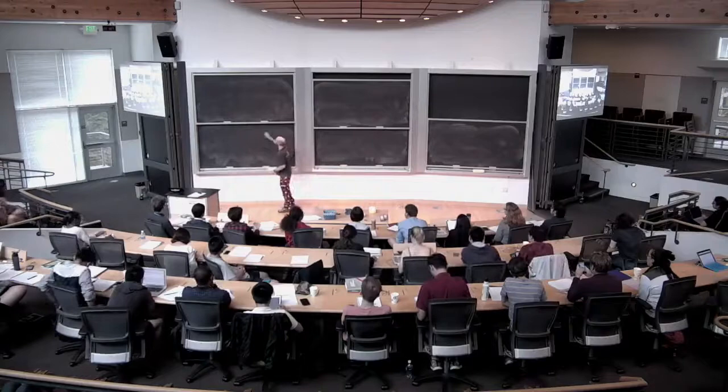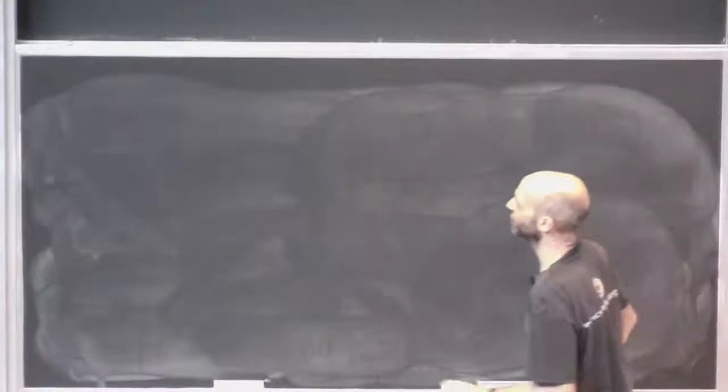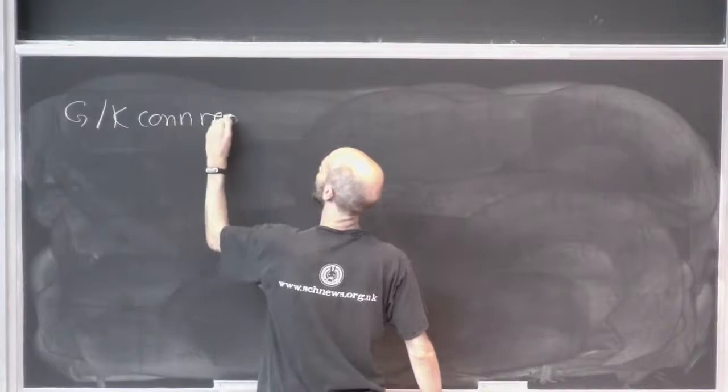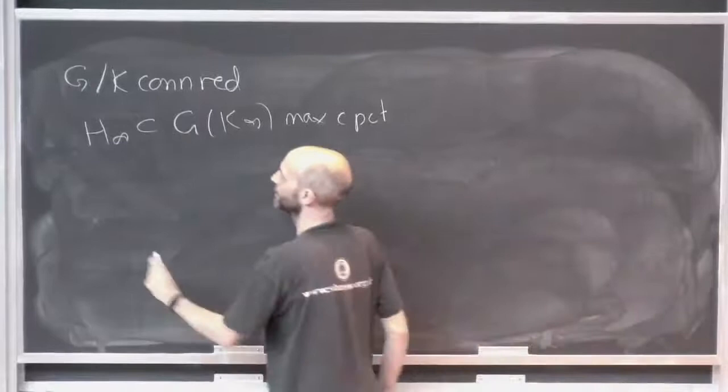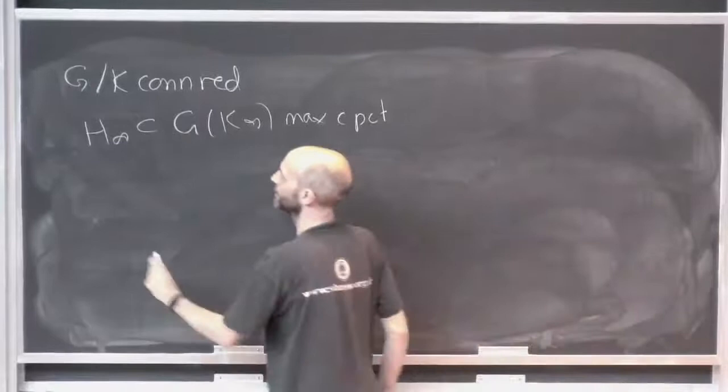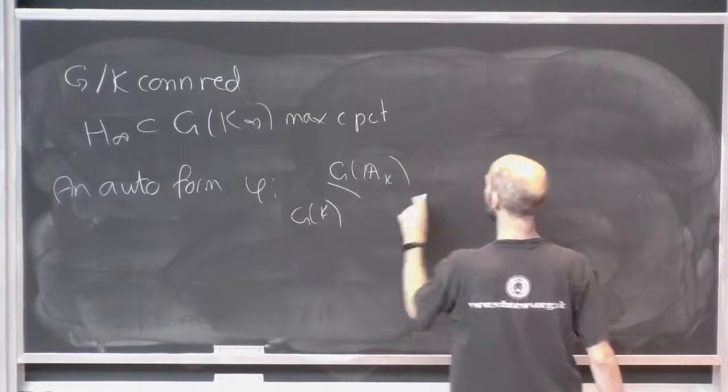People write down — it took me over six boards to define an automorphic representation, but there are notational cheats. So you have G over K, connected reductive. You have H_infinity living in G(K_infinity), maximal compact. An automorphic form phi from G(Adels) over G(K) to C.